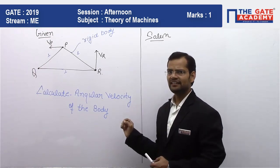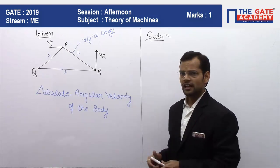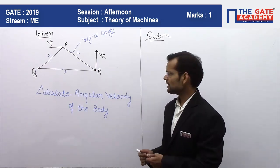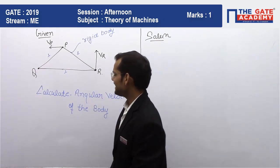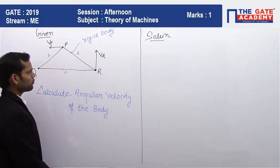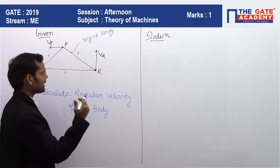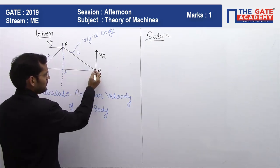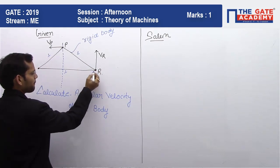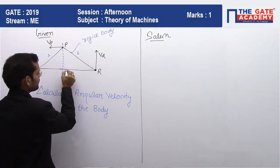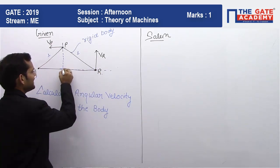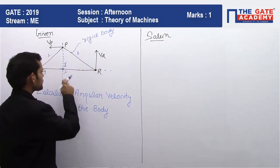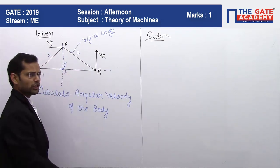To locate the instantaneous center for the given body: the instantaneous center is a point about which the body is assumed to be in pure rotation. To locate it, we draw perpendiculars at known velocity points. The velocity of point B is known — it is along the horizontal axis — so the instantaneous center lies somewhere on that perpendicular line. The velocity of point R is in the vertical direction, so we draw a perpendicular line at point R. Where these two lines intersect will be the instantaneous center of the body.